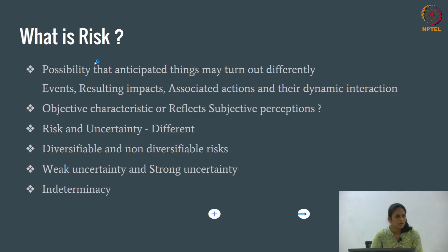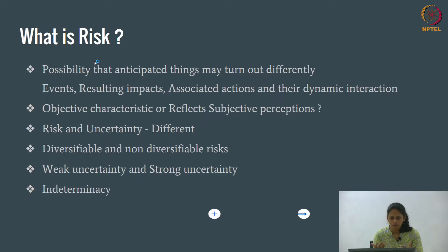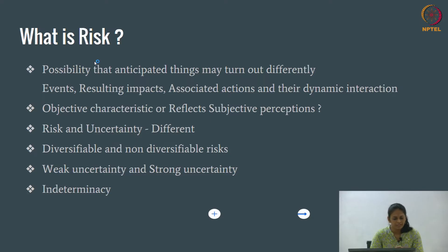There is always a confusion between risk and uncertainty. Risk is when you know the future outcomes; uncertainty is when you don't know what the future outcomes are. So both are different. Some people differentiate risks into diversifiable and non-diversifiable risks.